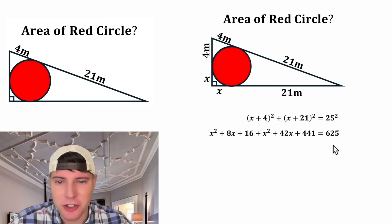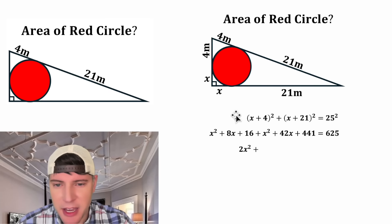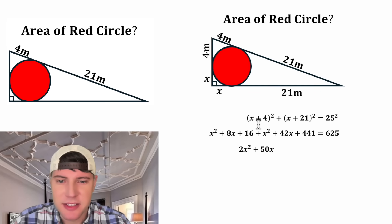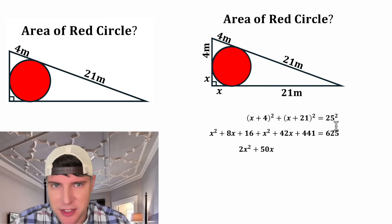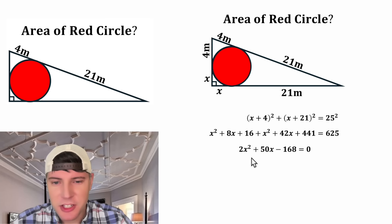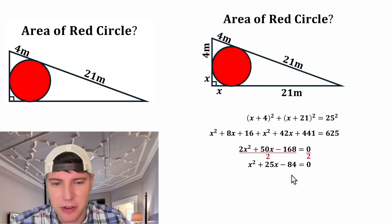Now we can combine like terms. x² + x² gives us 2x². Then 8x + 42x is 50x. And 16 + 441 − 625 gives us −168. So we have 2x² + 50x − 168 = 0. Each term is even, so dividing both sides by two gives x² + 25x − 84 = 0.